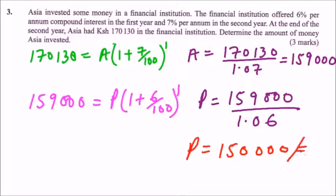So that is the amount he had invested in the bank or the institution for him to get 170,130. That is how you work it out. You earn yourself three marks.